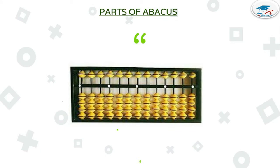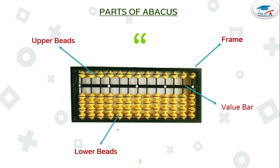Now parts of Abacus. The outer portion of Abacus tool is called frame. This frame is divided into two parts, upper part and lower part. The beads on upper part are called upper beads. The beads on lower part are called lower beads. And this frame is divided by value bar. The center dot of this value bar is called unit place and there are black rods, they are called rods.